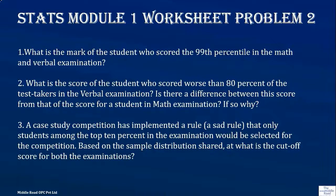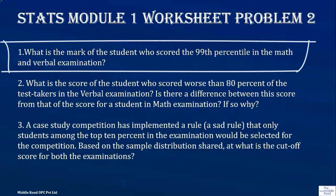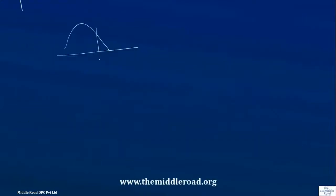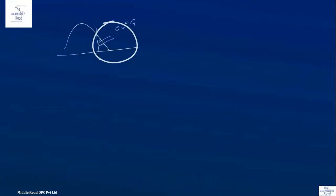I'll mark the student who scored at the 99th percentile in math and verbal examinations. Looking at the point estimate, the percentile here is 0.99. What we need to find is the Z-score corresponding to 0.99. The Z-score for this should come to 2.33.